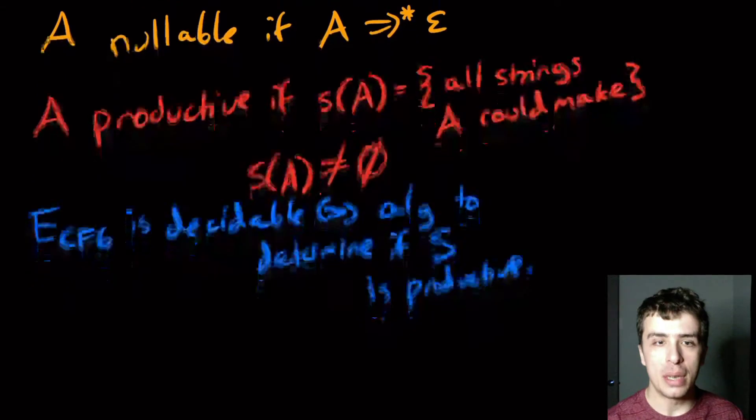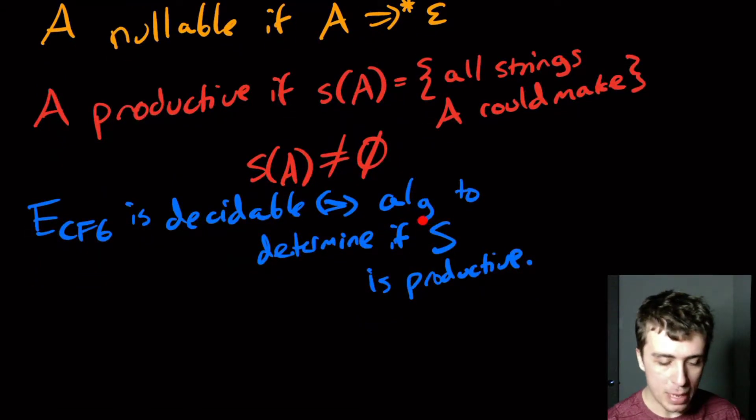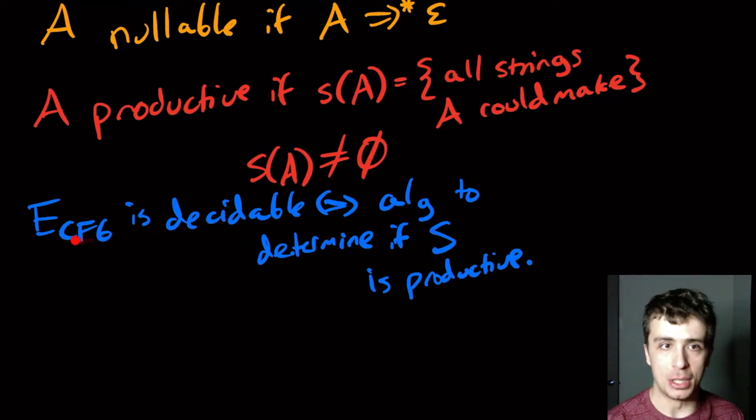Okay, and then what we are asking here is, E_CFG is decidable, if and only if there's an algorithm to determine if the start variable s is productive. Okay, so then the reason for that is, if we figure out if s is productive or not, then the opposite answer is the one that we give to E_CFG. Why? Because if we determine that s is productive, that means it can make something, which means that the grammar's language is not empty. And if it's not productive, then the language of the grammar is empty. And then therefore, we say accept instead of reject.